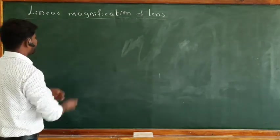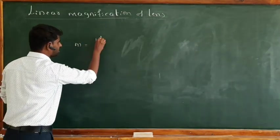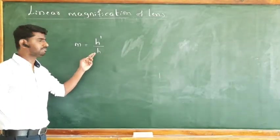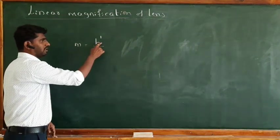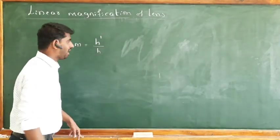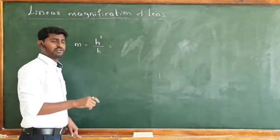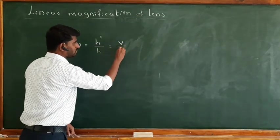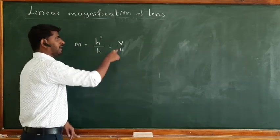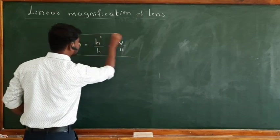To calculate magnification symbolically, we write linear magnification as M, where M is equal to H' divided by H. Here H' is the size of the image and H is the size of the object. The ratio of the size of image to size of object is always equal to the ratio of the distance of image to the distance of object.